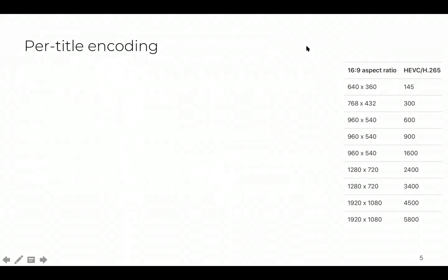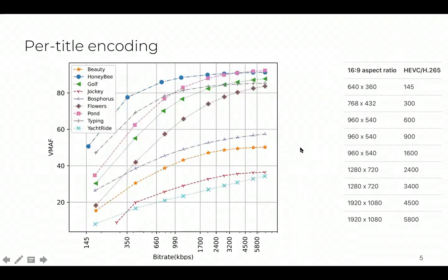Content providers usually use a fixed bitrate ladder — a fixed set of bitrates and spatial resolutions — for all video content. But video segments range from easy to encode to hard to encode, and show different quality-bitrate behaviors. In order to optimize bitrate ladders over different video contents, Per-title Encoding was introduced.